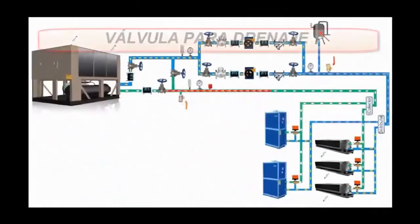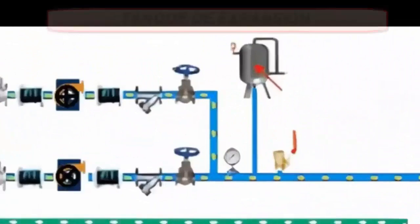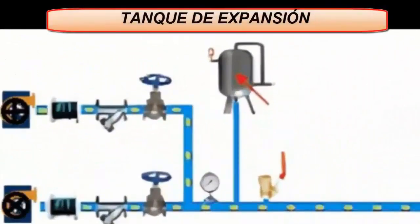10. The air purge allows to extract the air inside the pipes. 11. Valve for water drainage. 12. The expansion tank allows to absorb the volume changes of the water inside the pipe, product of the temperature changes.